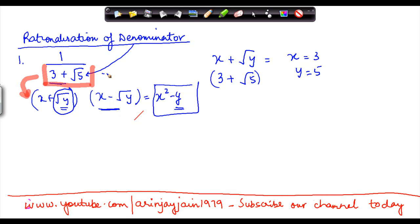But if we multiply the denominator only by this number, then that will change the equation. So what do we do here?